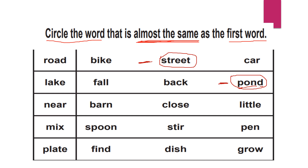The next word is 'near.' Remember the term 'this and that' — 'this' means near. Near means it's very close, so near meaning is 'close.' Other options like 'born' or 'little' will not come here.